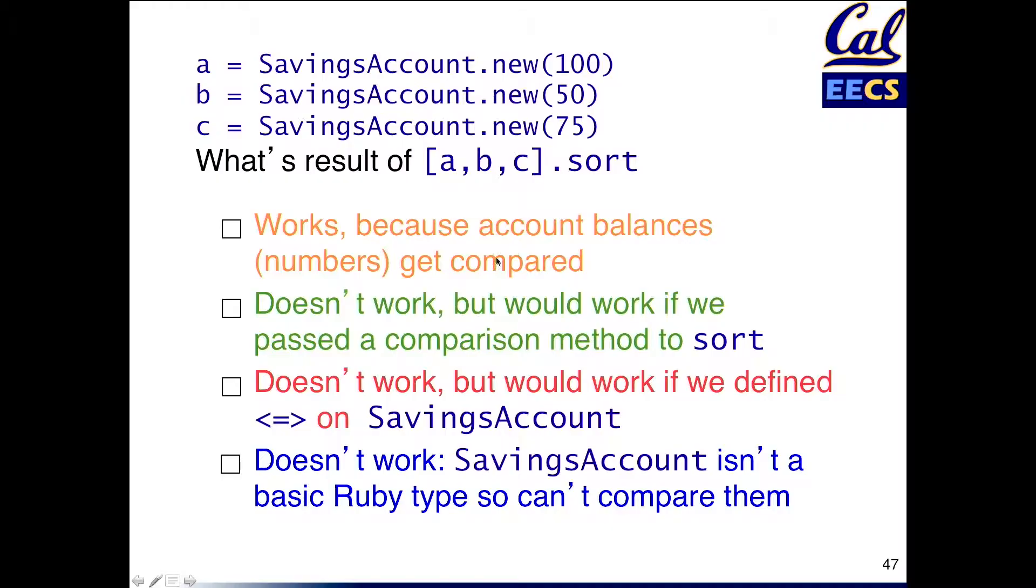Works because account balances get compared. Well that's certainly what we would like to be the case but comparing accounts isn't the same as comparing integers. So that's not it. If we passed a comparison method to sort, that's not the Ruby way, right? The Ruby way is sort makes some assumptions about the thing you're trying to sort, in particular that the thing knows how to compare itself to other instances of that thing.